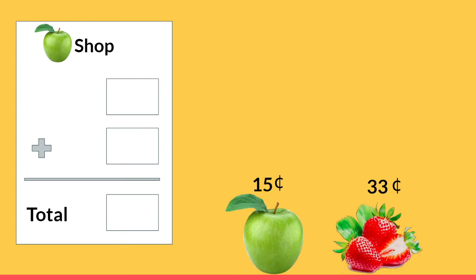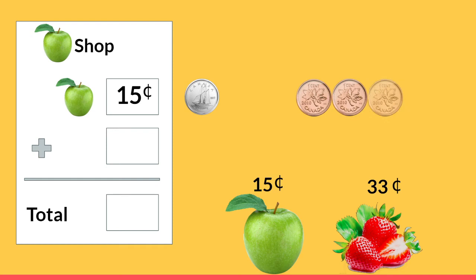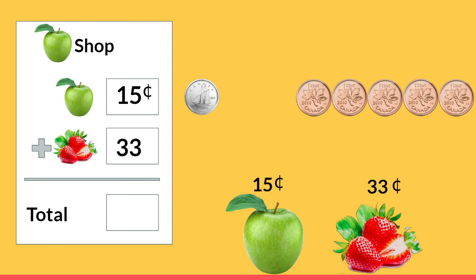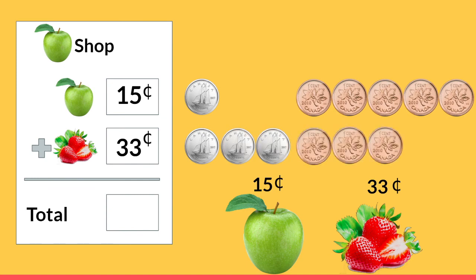Now we're going to pretend that at our store we want to buy an apple and some strawberries. The apple costs 15 cents: 10, 11, 12, 13, 14, 15. Now let's put the strawberries on our receipt. The strawberries cost 33 cents. Let's count that in dimes and pennies: 10, 20, 30, 31, 32, 33. Thirty-three cents.